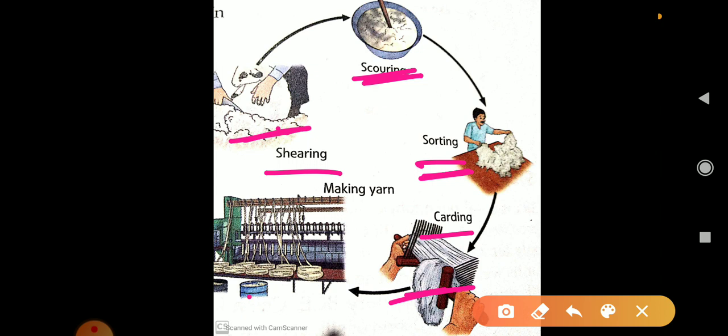Next is making the yarn. Carded wool is twisted into ropes called slivers. The slivers are stretched and twisted into thin yarns through spinning. Spinning for wool yarn is typically done on a mule spinning machine. This thread is ready to make the fabric.